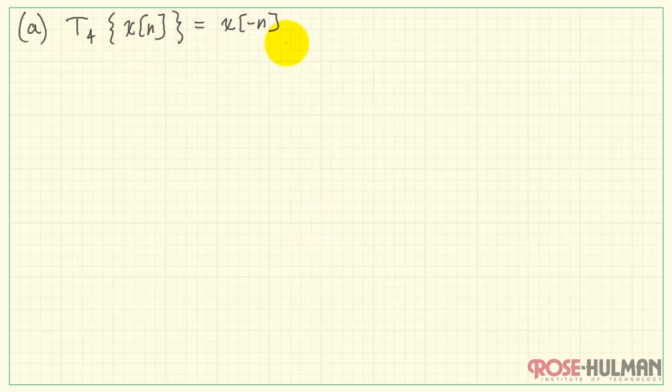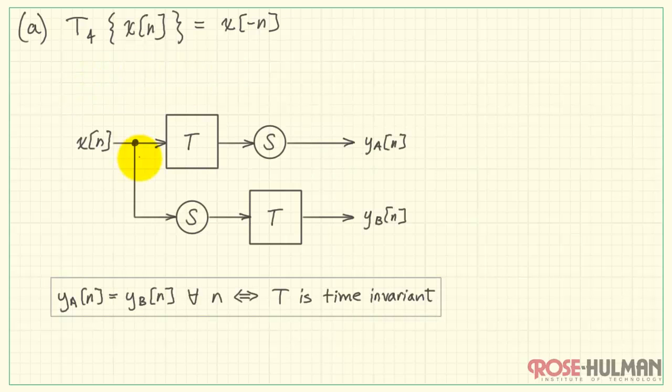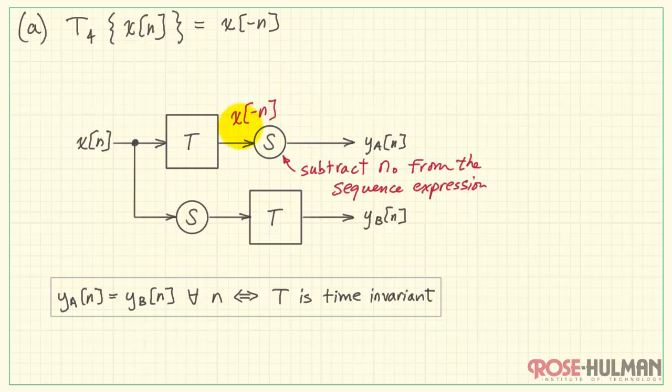Let's move on to the detailed solution. This is system T_4, which is defined as X[-n]. Here's our proof structure. Let's pass X through the system T, and that gives us X[-n]. We'll then pass that through the shift operation. That means we subtract n_0 from the sequence expression. Here we have X[-n - n_0].